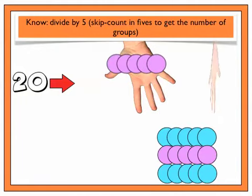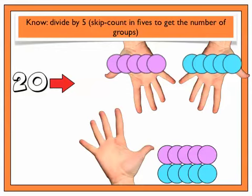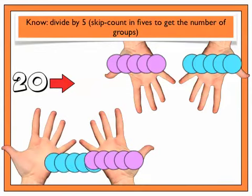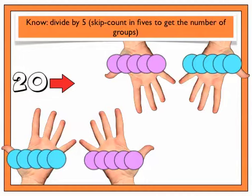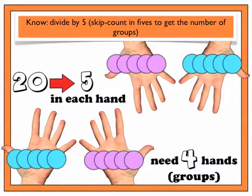1 friend, 2 friends, 3 friends, and 4 friends. And that's it. We have shared out all 20 counters and all 4 friends have an equal set of 5. That's 5 in each hand. That means we need 4 hands or 4 groups.